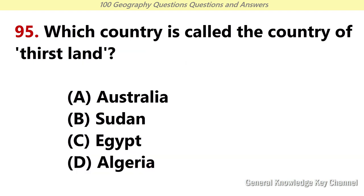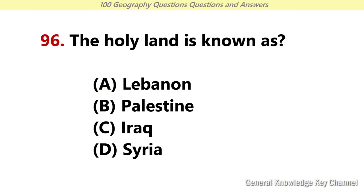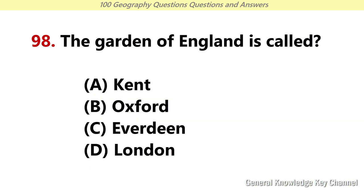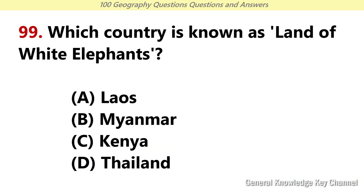Which country is called the country of trust land? Answer A: Australia. The holy land is known as? Answer B: Palestine. Which country is called the country of snakes? Answer B: Brazil. The garden of England is called? Answer A: Kent. Which country is known as land of white elephants? Answer D: Thailand.